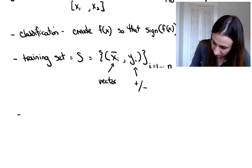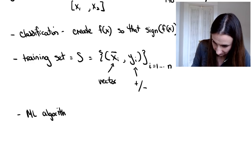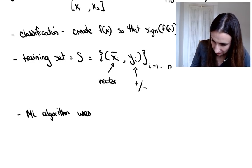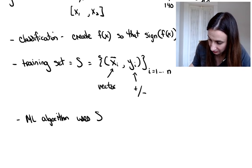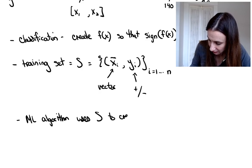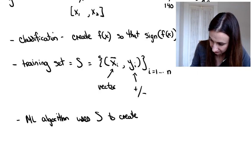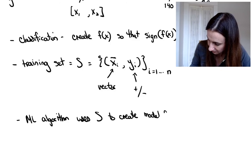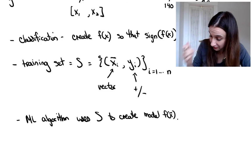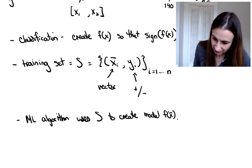Okay. The machine learning algorithm uses S uses that training set to create its model f of x. Okay. Sometimes I forget the vector notation. So I apologize if I do that.